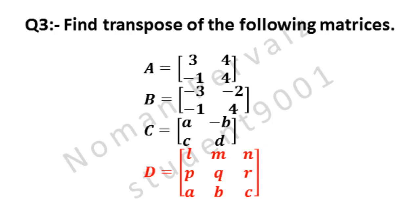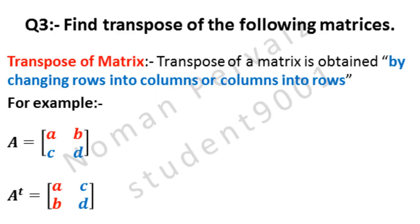First of all we will see the definition of transpose of a matrix, then we will solve the question. Transpose of a matrix is obtained by changing rows into columns, or columns into rows. For example, matrix A has 4 elements which are A, B, C, and D.